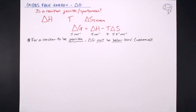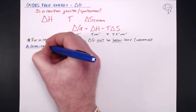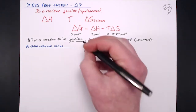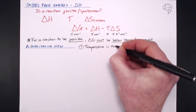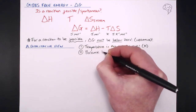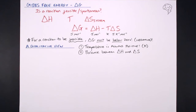Let's take a qualitative view of the kinds of reactions that are going to be feasible. With delta H, T, and delta S, there are a couple of things to bear in mind. First, temperature is always a positive value because it's in kelvin — you can't get minus kelvin; zero kelvin is absolute zero. So what's really left is a balance between delta H and delta S.